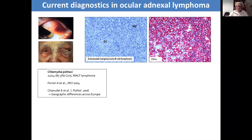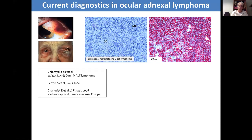There was a proposal of an association with Chlamydia psittaci, described by Ferreri and co-workers in Milan. It was quite controversial, and as a result Estelle Chanudet set up a multicentre collaborative study, which found the association only existed in northern Italy — and has since also been described in South Korea. It is really quite an exceptional finding, and in the vast majority of cases there is no association with Chlamydia. That said, some patients are treated with doxycycline on the off chance it may cause regression of the tumour.